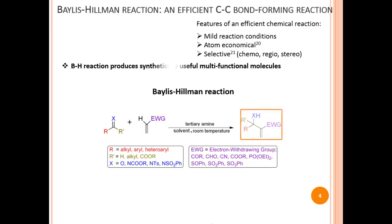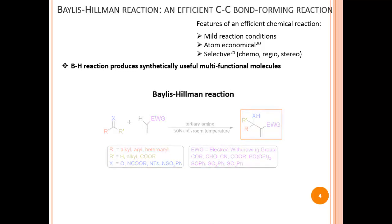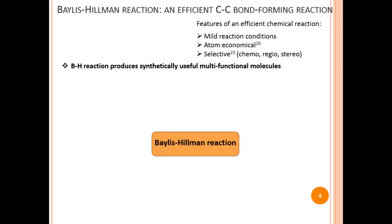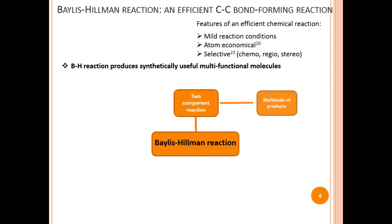In addition, the Bayliss-Hillman reaction produces synthetically useful molecules. It is a two-component reaction which can open a doorway to a multitude of functionally diverged products. The Bayliss-Hillman reaction also produces chiral molecules.